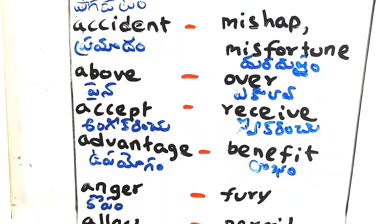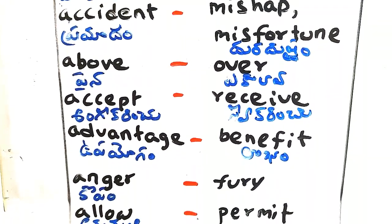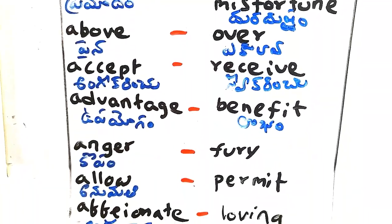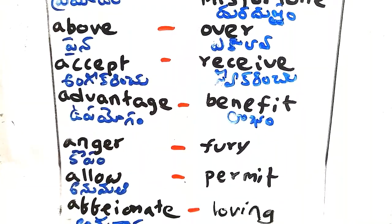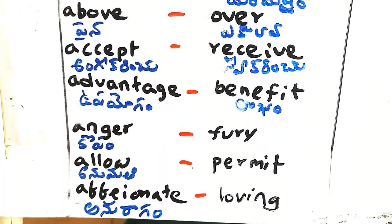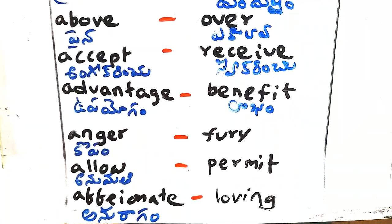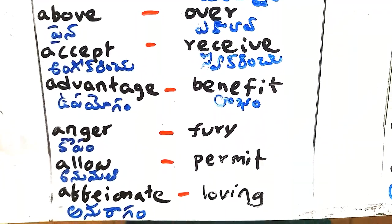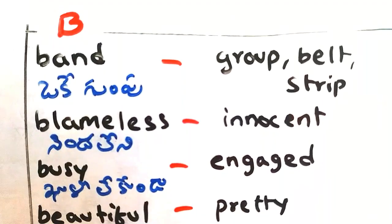Accept - angikaranchu, receive. Advantage - uppayogam, benefit. Anger - coopam, fury. Allow - anumathy, permit. Affectionate - anuragam, loving. Next, B-Words.